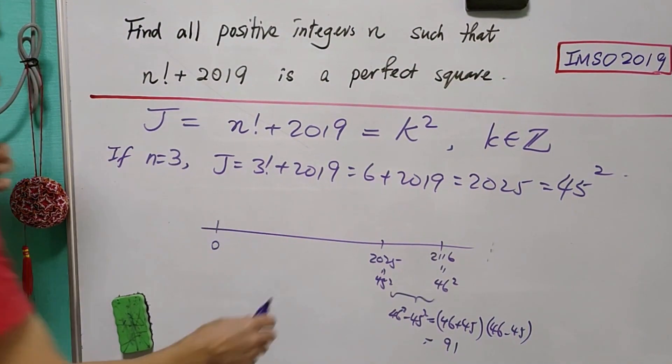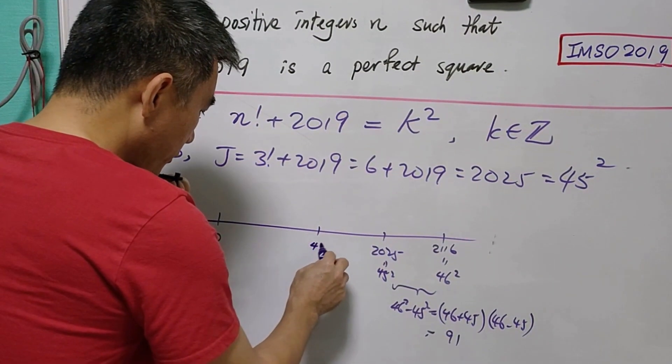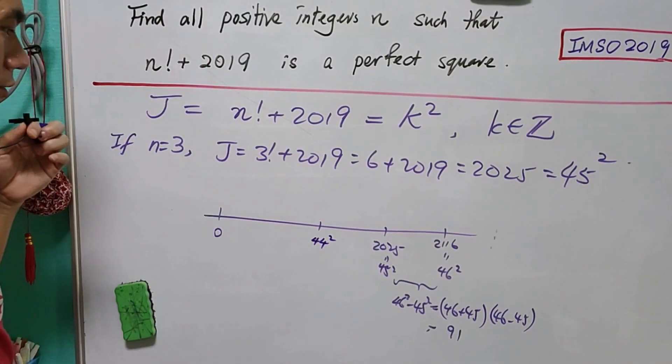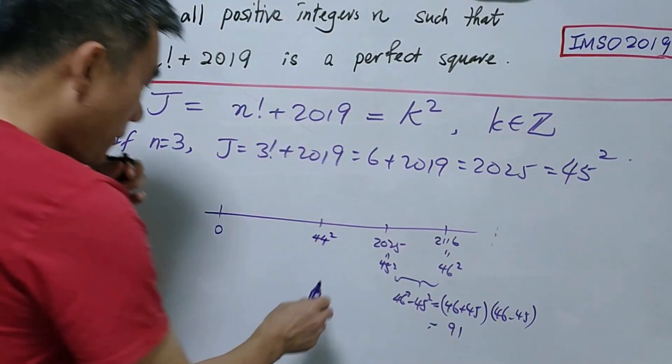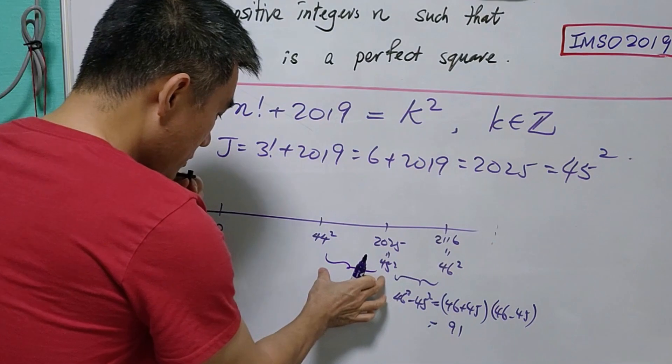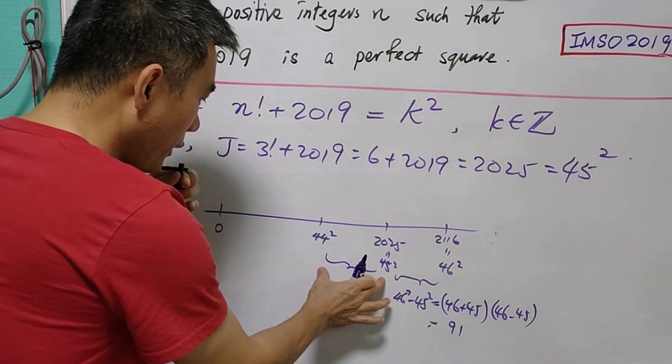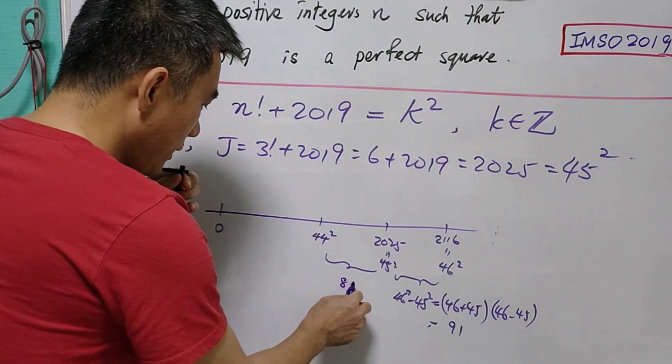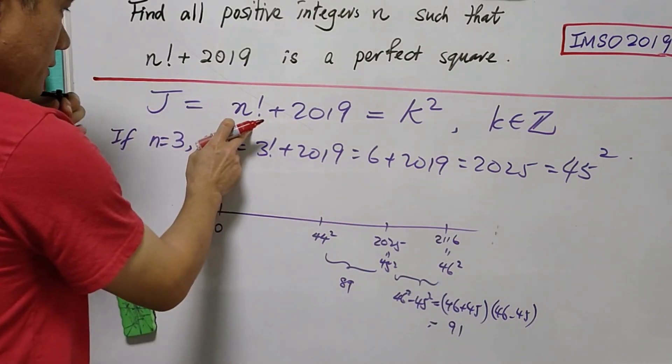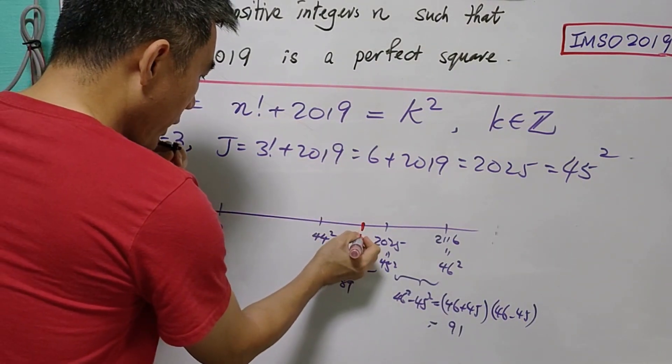Likewise, for the previous number, that is 44². We are not interested to know what this number is, but we know that the difference between these two perfect squares equals 89.